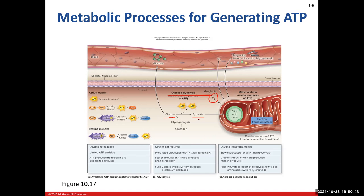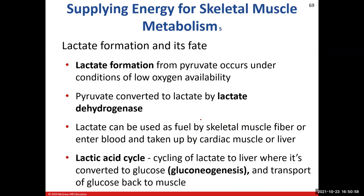But what happens if oxygen is not present? We get our two ATP molecules, but we can also generate lactate. When we have low oxygen, lactate will be formed. Some of you may be familiar with lactic acid buildup that causes soreness in muscles. Pyruvate is converted into lactate by the enzyme lactate dehydrogenase. Once we have lactate, we can ship it around the body through the blood system, potentially to the liver or even cardiac tissue, and we can use lactate as fuel.